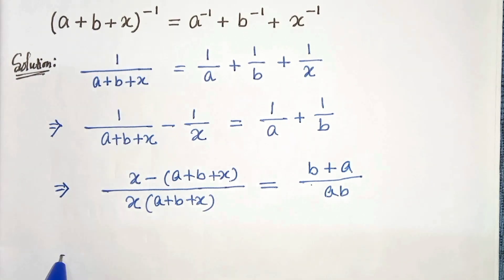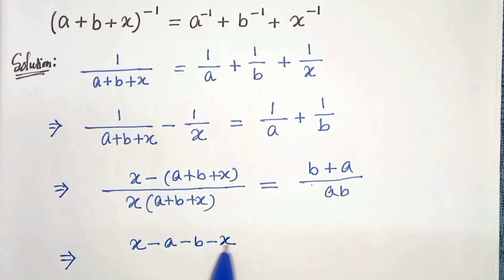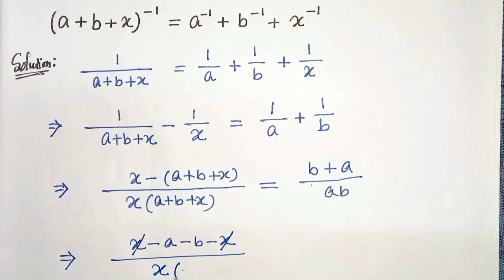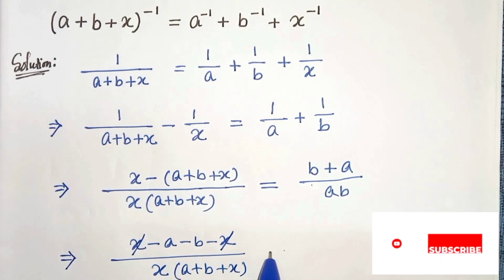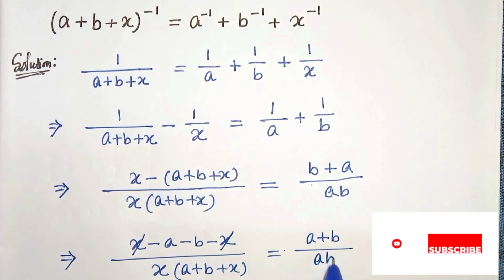In the next step, x minus a minus b minus x: the x and minus x get cancelled. So we get minus(a + b) divided by x times (a + b + x) equals (a + b) divided by ab.